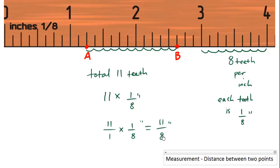Or we can simply rewrite it as a mixed fraction. How many times does eight fit in once? One, and what's 11 minus 8? Three eighths of an inch. So the distance between AB is one and three eighths of an inch.